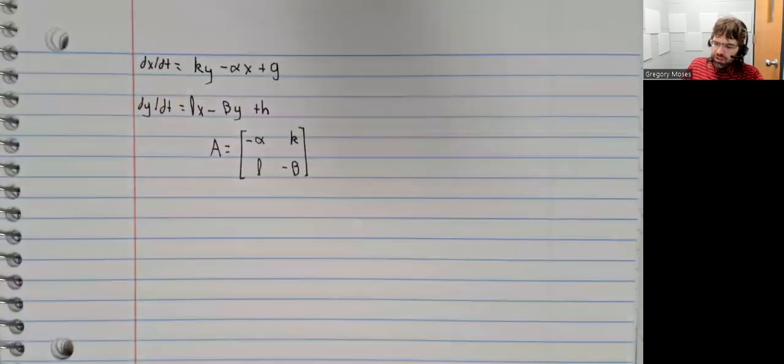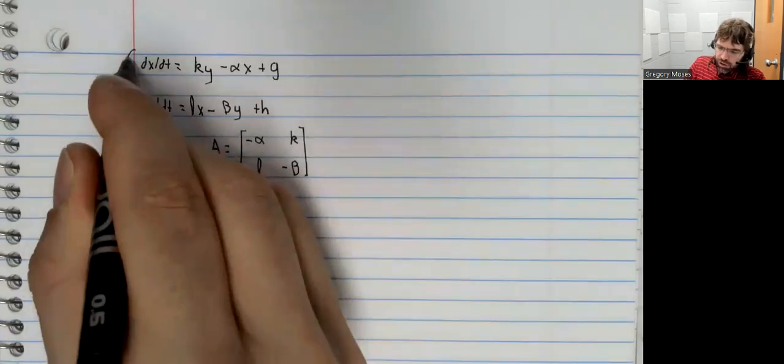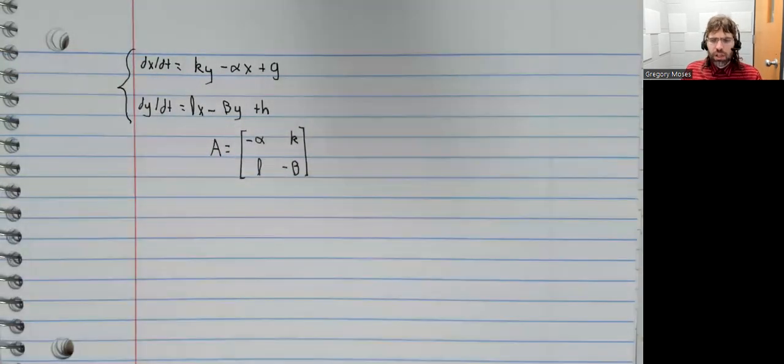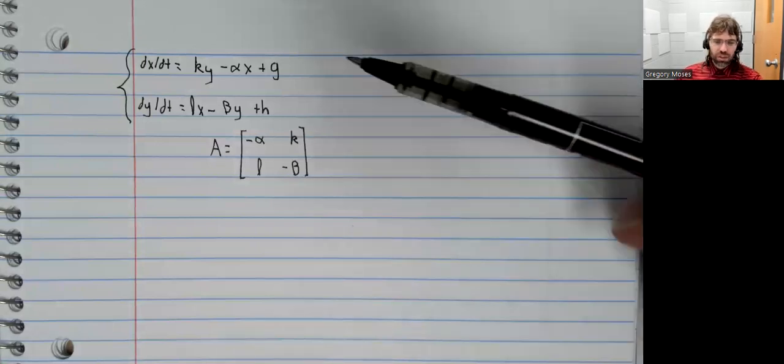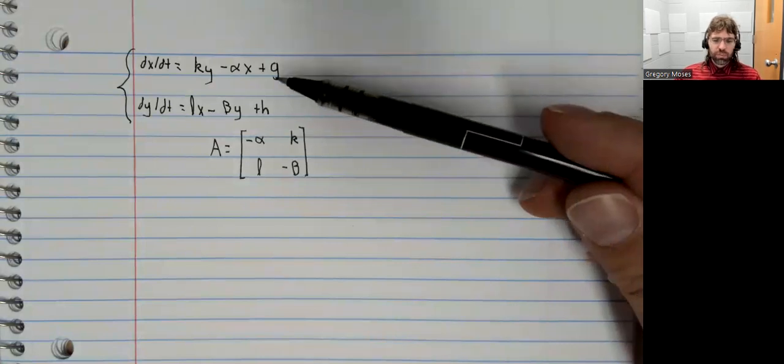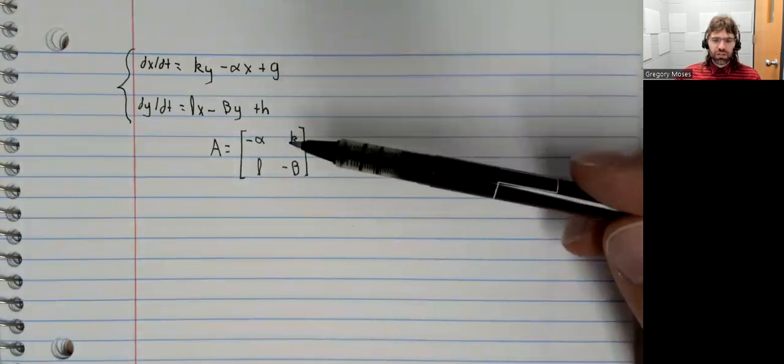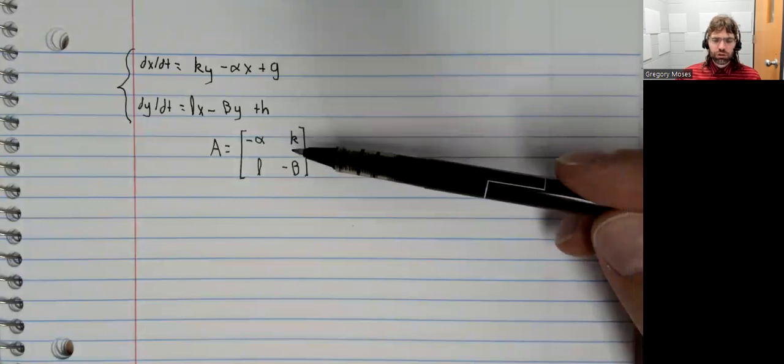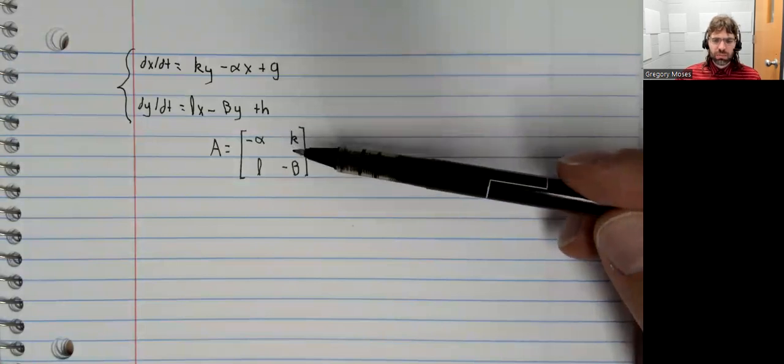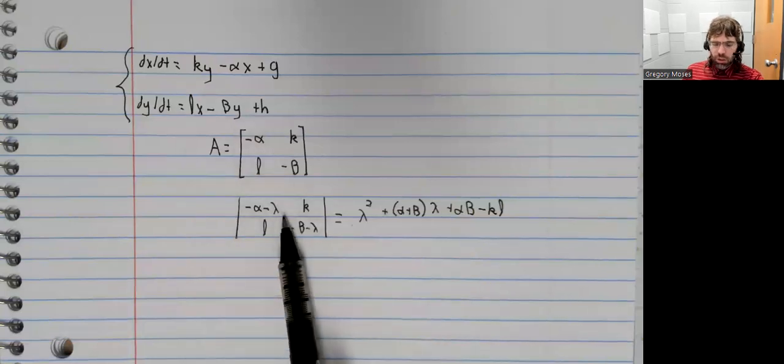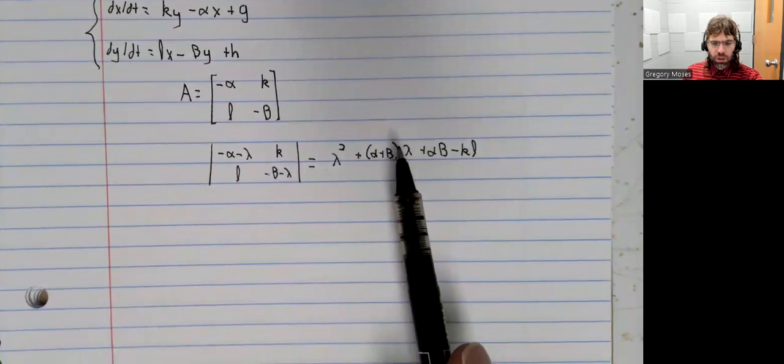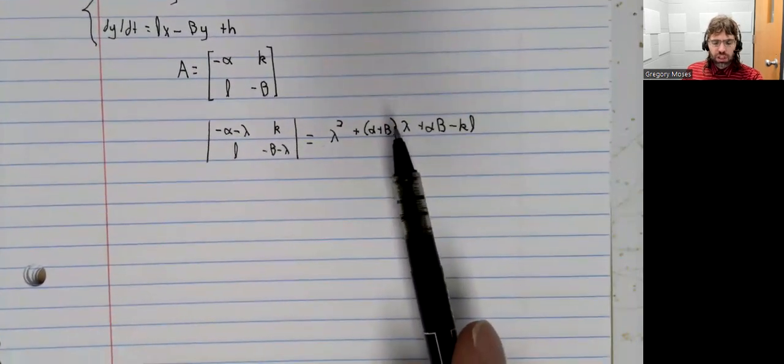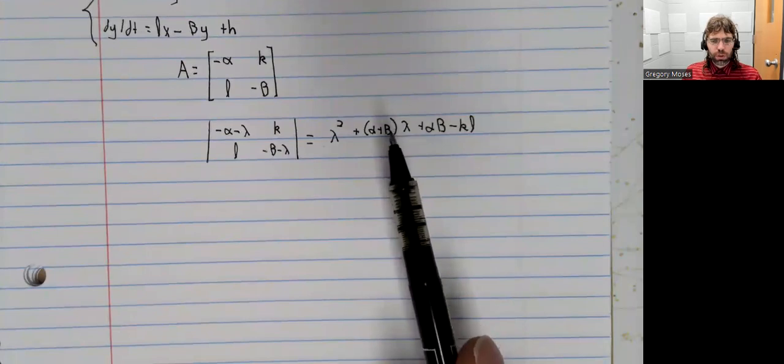So here is the Richardson model. In the last video, we talked about shifting it around a little, but this is the model. This is the matrix A, whose eigenvalues we're interested in. We compute the determinant, we get the characteristic polynomial.